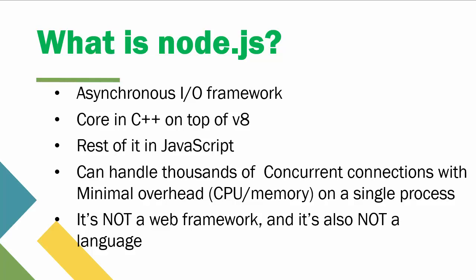Node.js is an asynchronous IO framework — we'll see later what synchronous versus asynchronous means. The core of Node.js is written in C++ on top of the V8 engine, so Node.js is written in C, C++, and JavaScript.